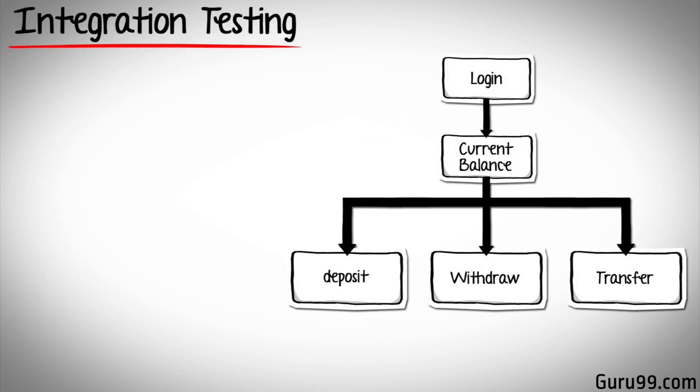The modules in this project are assigned to five different developers to reduce coding time. Coder 2 is ready with the current balance module. Coder 5 is not ready with the transfer module required to test your integration scenario. What do you do in such a situation?